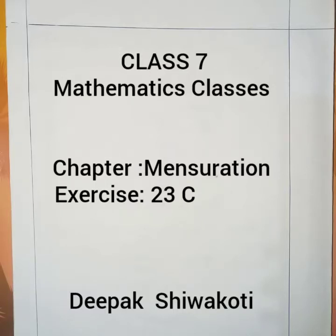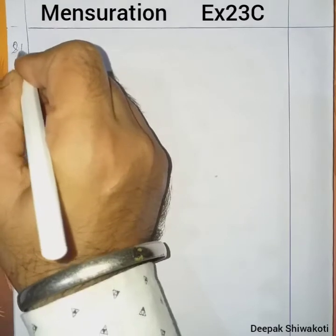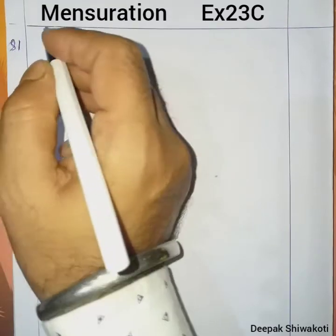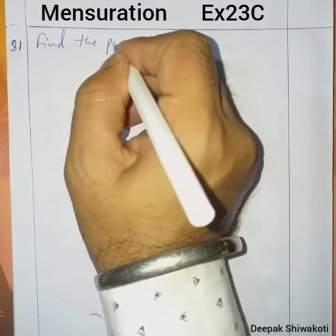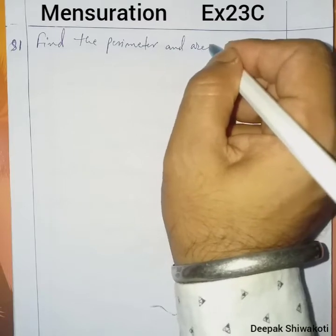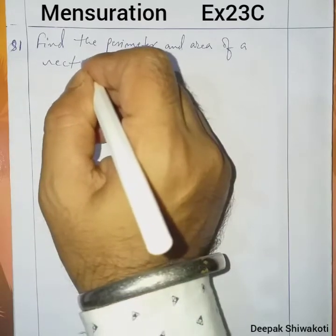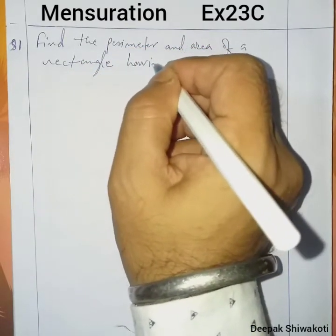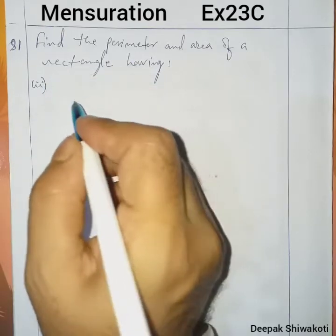Welcome to Class 7 mathematics classes. Today we are going to do Exercise 23C from the mensuration chapter. Question number 1 — we have done number 1 in a previous video class, so we start from number 2. Find the perimeter and area of a rectangle.